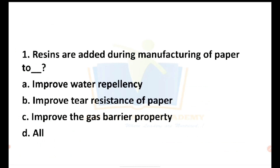Resins are added during manufacture of paper. When we do the manufacture of paper, resins are added. The options are: to improve water repulsancy, to improve clear resistance of paper, to improve gas barrier property, or all of the above.